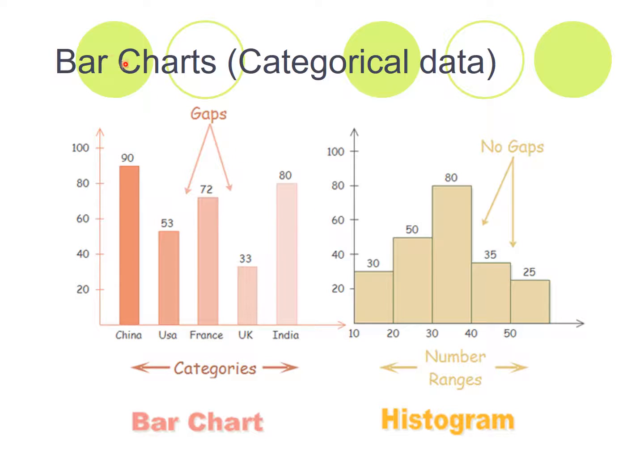So here, bar charts are used for categorical data. We've got categories over here and you'll notice that a bar chart has a gap between the categories. And here's a histogram. So a histogram then has no gaps. And so they go right up. And again, it's usually a grouped frequency table that has been used and has been displayed using a histogram.